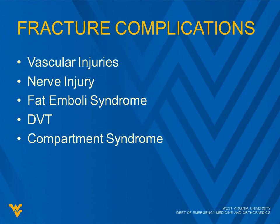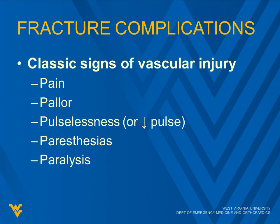Fracture complications: we're going to talk about vascular injuries, nerve injury, fat emboli syndrome, DVTs, and compartment syndrome. We'll spend the most time on compartment syndrome. Classic signs of vascular injury are pain, pallor, pulselessness or just decreased pulse, paresthesias, and paralysis.